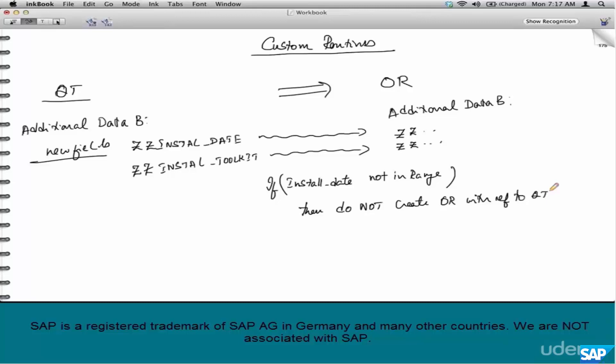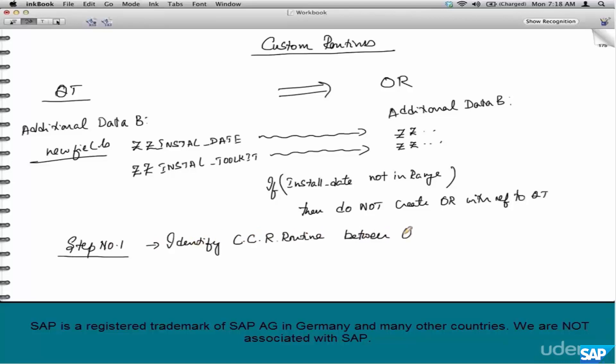We're not saying no — we're just asking the customer to start over with a new quotation and new service dates. But the standard SAP system does not check that. The installation field is a new custom field, so SAP routines are not aware of it. So here are the steps. Step 1: identify the copy control requirement routine between the source and target documents — in this case, QT and OR.